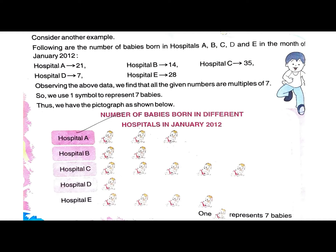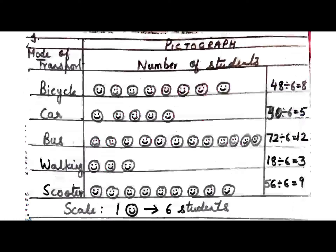For Hospital A with 21 babies: 21 ÷ 7 = 3, so draw 3 pictures. For Hospital B with 14 babies: 14 ÷ 7 = 2, draw 2 pictures. For Hospital C with 35 babies: 35 ÷ 7 = 5, draw 5 pictures. For Hospital D with 7 babies: 7 ÷ 7 = 1, draw 1 picture. For Hospital E with 28 babies: 28 ÷ 7 = 4, draw 4 pictures.